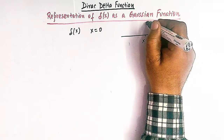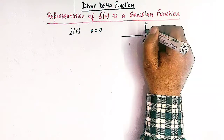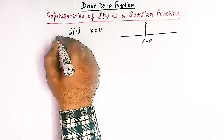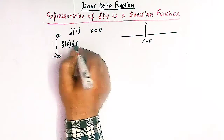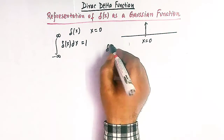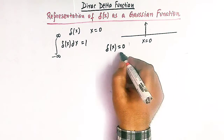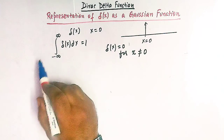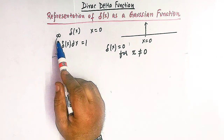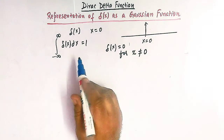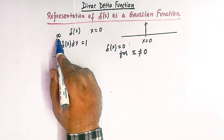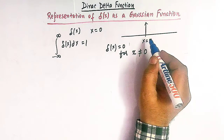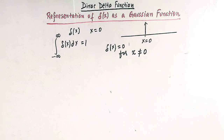At x equal to 0, the delta function has a non-zero value. We can define the integral from minus infinity to infinity of delta(x) dx as equal to 1, and delta(x) is equal to 0 for all values of x not equal to 0. The range of integration can be over any domain surrounding the given point at which the delta function is non-zero.